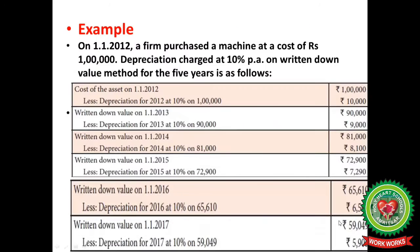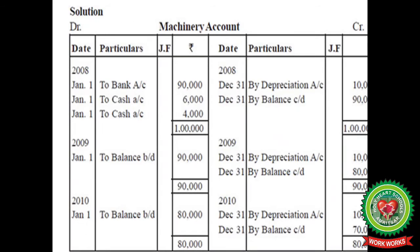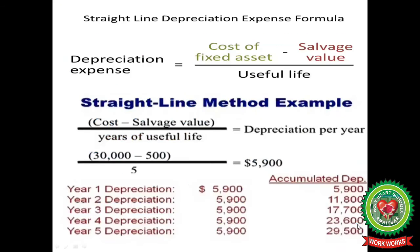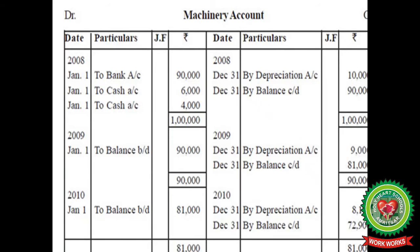Let me highlight a key difference. In straight line method, the balance at the end of three years was Rs 70,000. But when using the written down value method, the balance is higher at Rs 72,900. We can compare the results: if we apply the same rate of depreciation on the same fixed amount under the fixed installment method, the net value of the asset decreases faster. But under written down value method, the value still decreases — though not at the same rate as in straight line method.